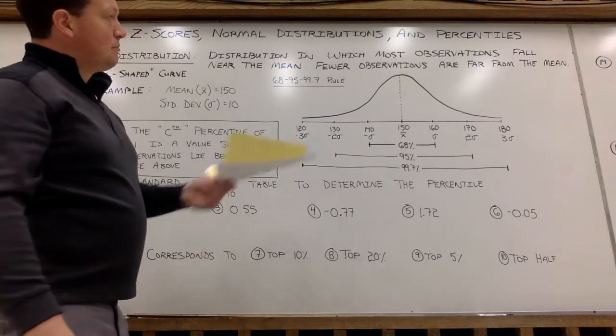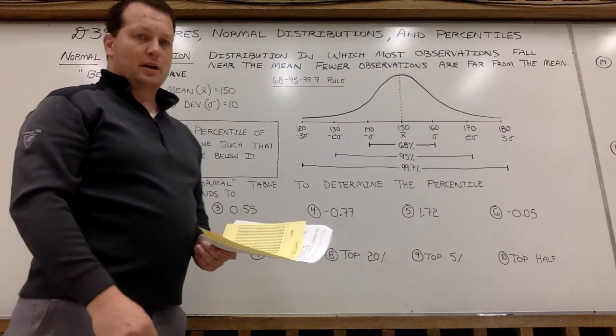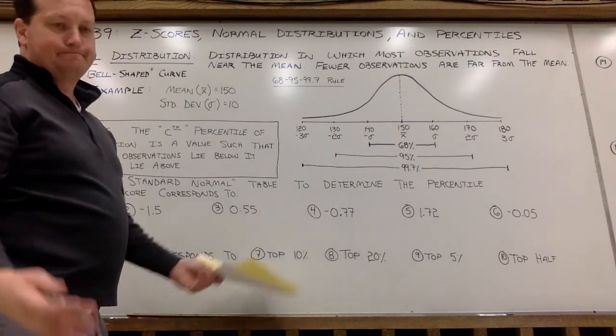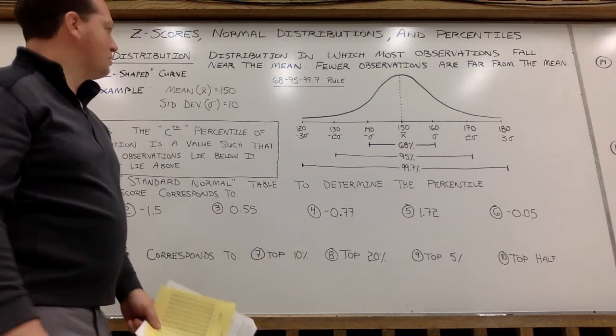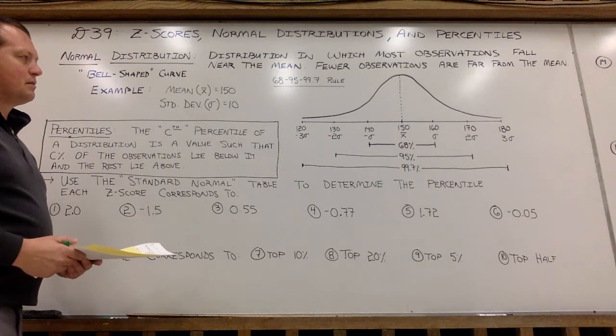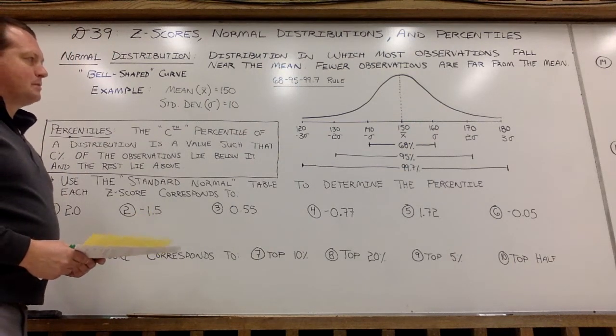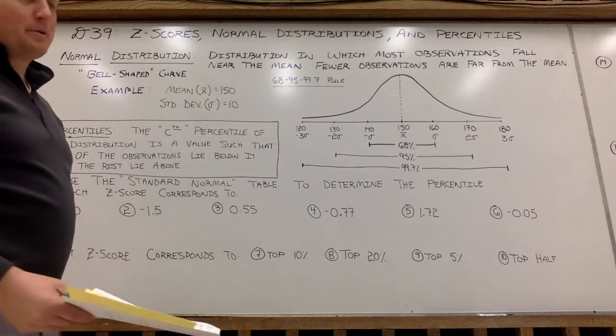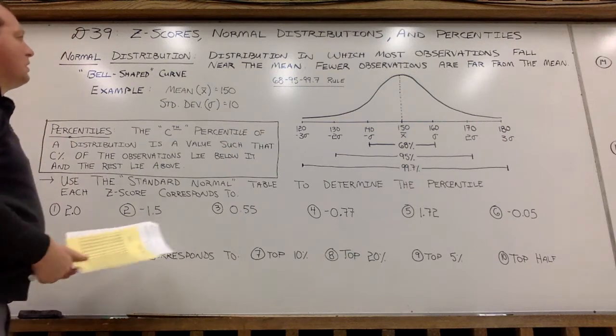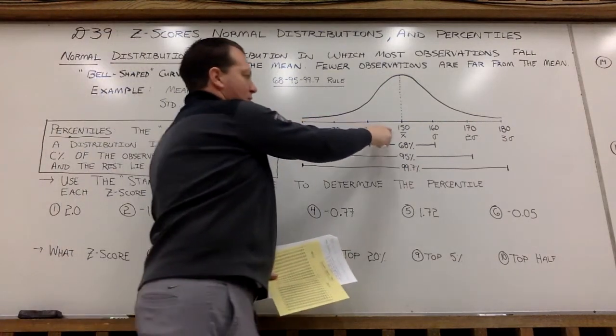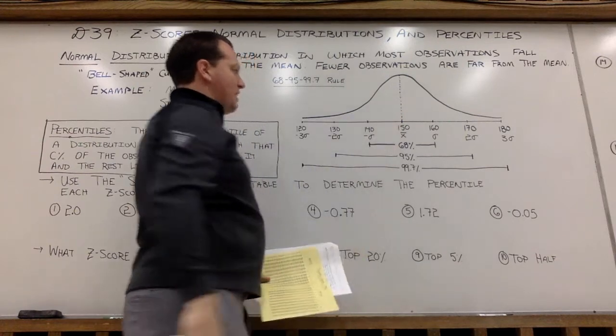You will see some professors in college grade off the bell curve. So let's talk about how we can utilize bell-shaped curves in order to compare values to one another. So I have an example here with a mean of 150, so my average value in this data set is 150,